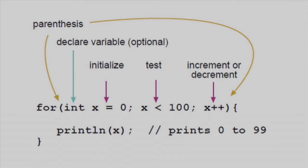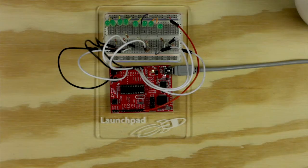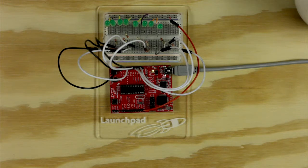Now let's see how this can be used in Energia with an example. We will need an MSP430 launchpad, nine 220 ohm resistors and LEDs, some hookup wires, and a breadboard.